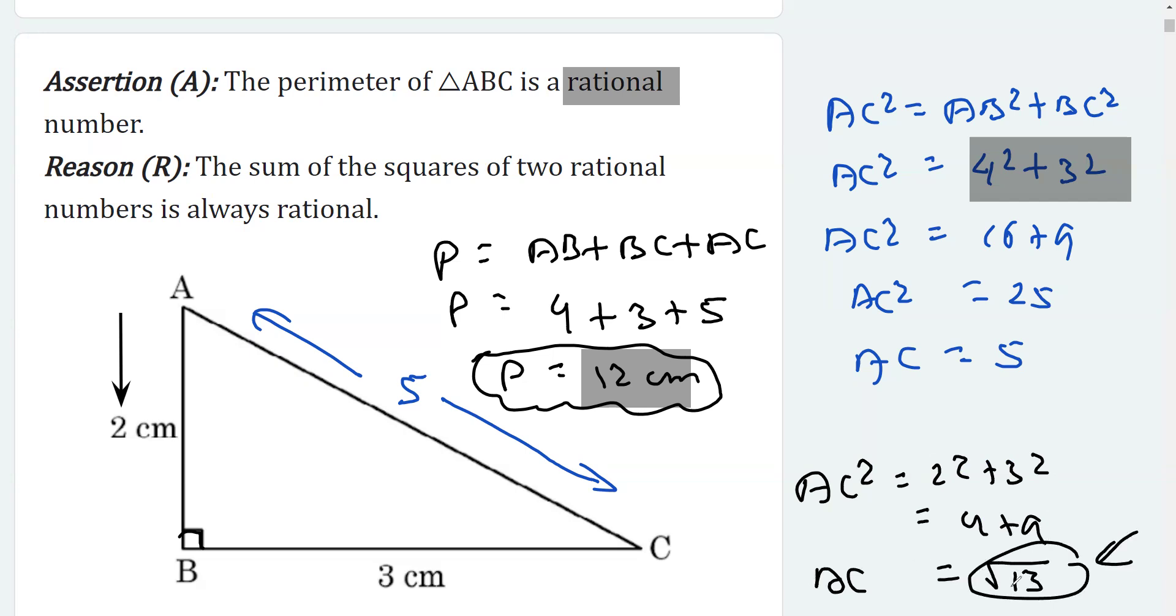This is not rational. Under root 13, as its decimal expansion is non-terminating non-recurring, therefore we'll say that assertion is correct but reason is wrong, because the sum of the squares of two rational numbers can be a rational number or an irrational number.